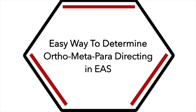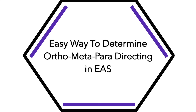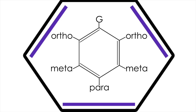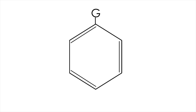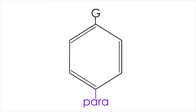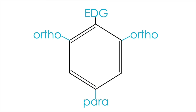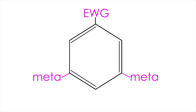I'm going to show you an easy way of determining whether a substituent on a benzene ring is ortho, para, or meta directing without having to memorize anything. You probably already know the ortho, meta, and para positions on a benzene ring. You probably also already know that electron donating groups on benzene rings are ortho-para directing and electron withdrawing groups are meta directing.